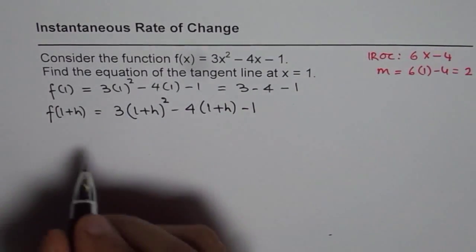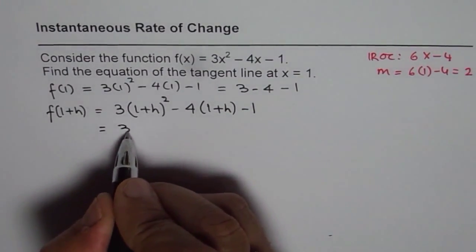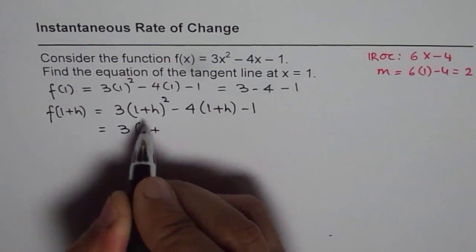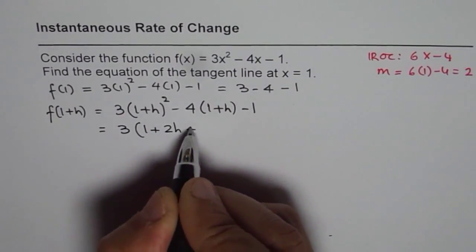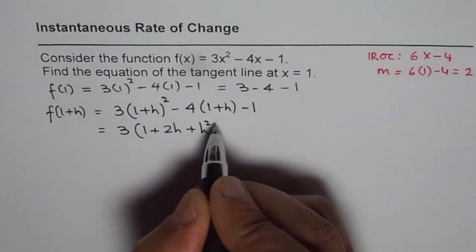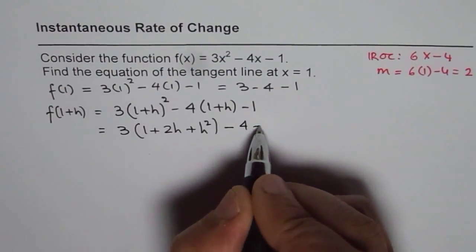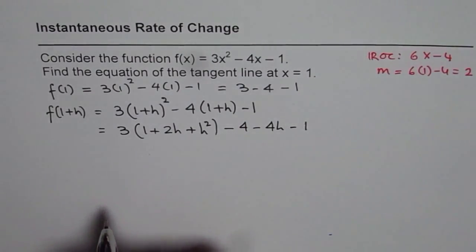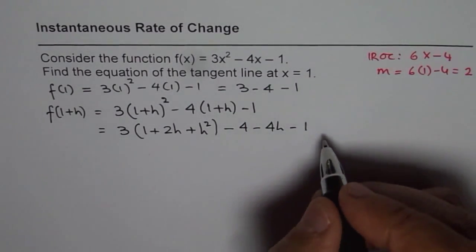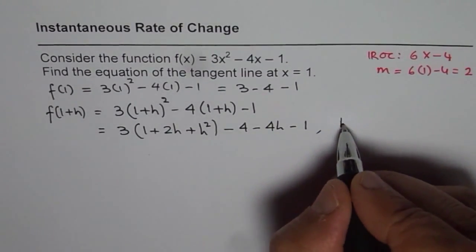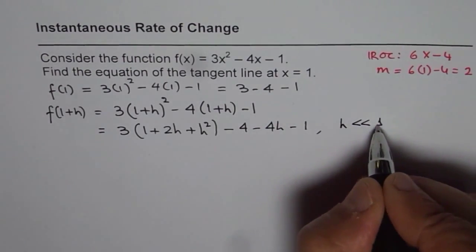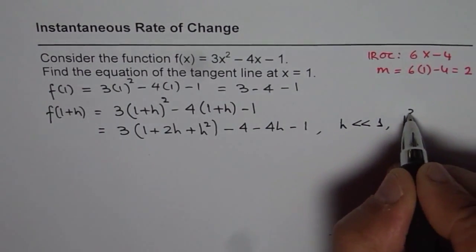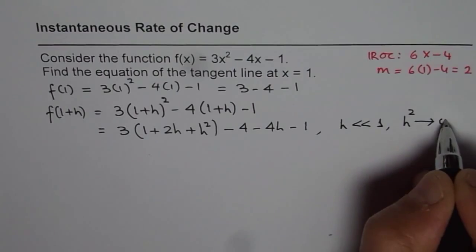Expand it. When you expand it, you get 3 times (1 + 2h + h²) - 4 - 4h - 1. Now, remember one thing. What we are saying is that h is very small as compared to 1 and therefore h² will be approaching 0.